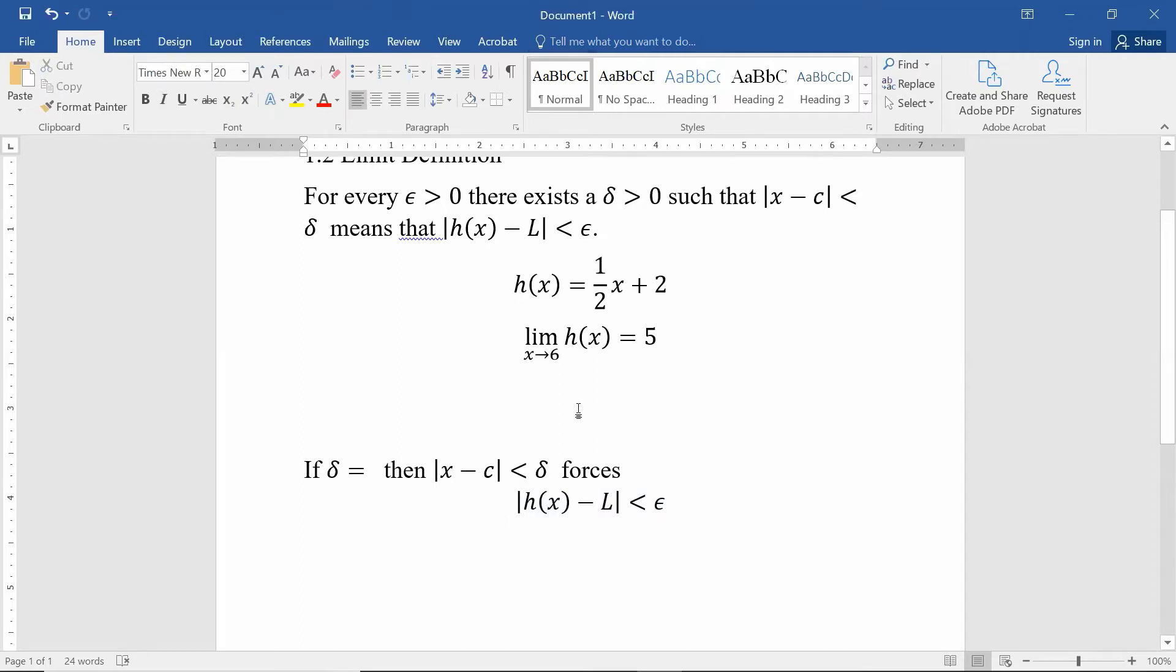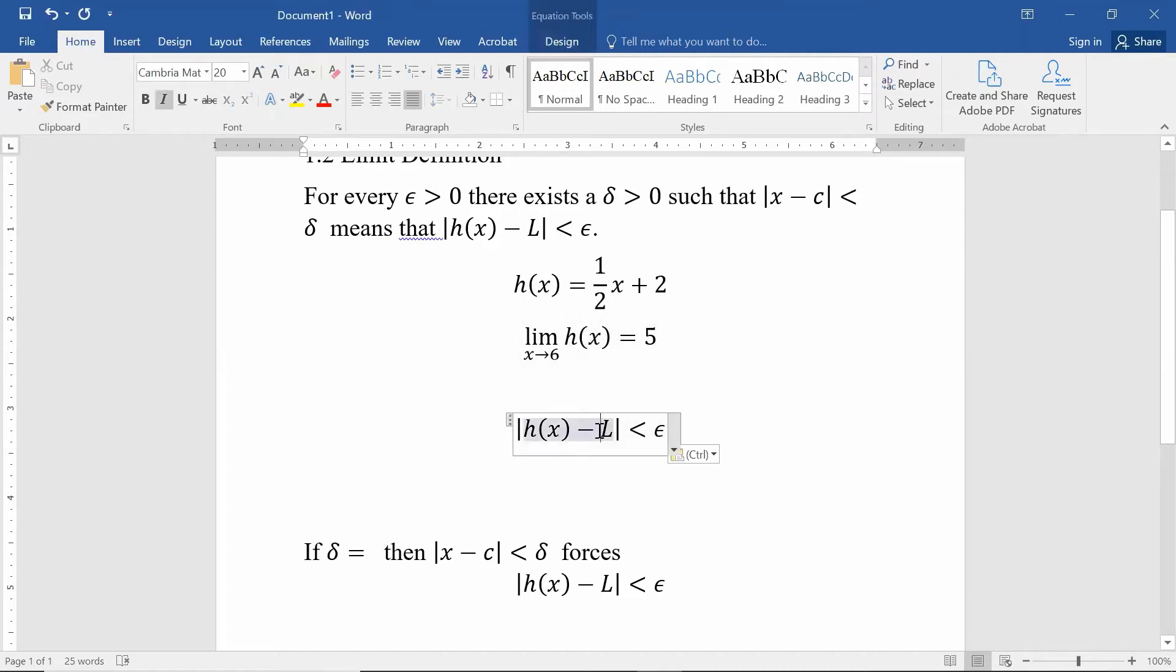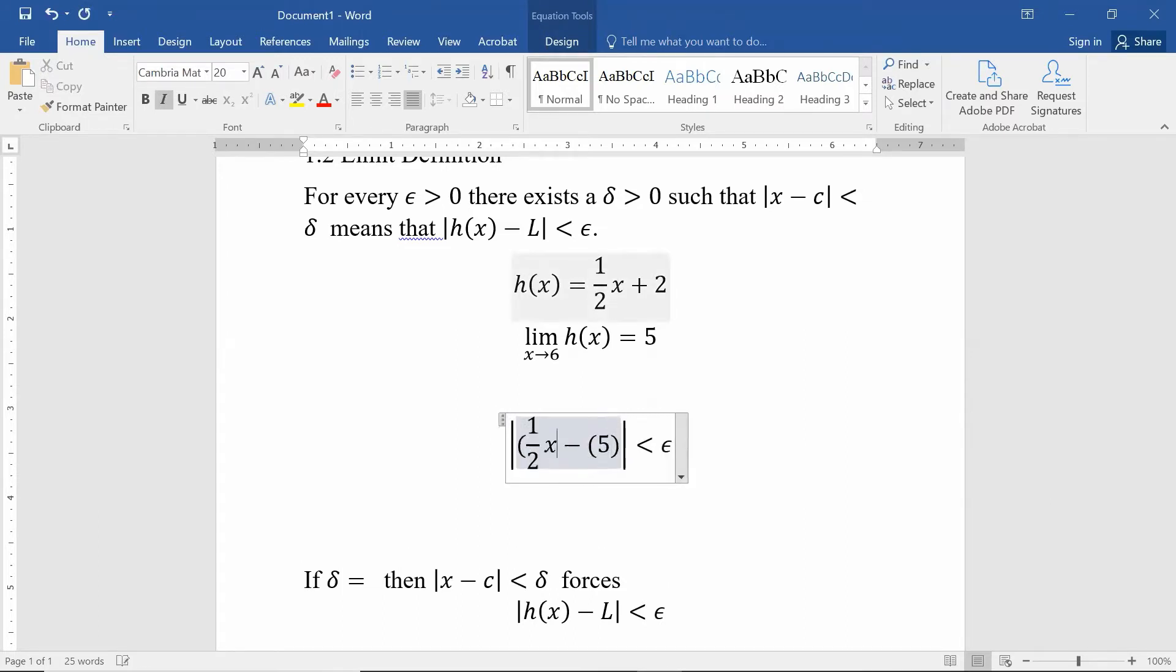Let's see how this works. First off, my limit here is supposed to be 5, so we're going to replace the L with a 5. My output is h(x), or I'm going to call it 1/2x + 2, and we want our epsilon, well the first version we want our epsilon to be 0.1.